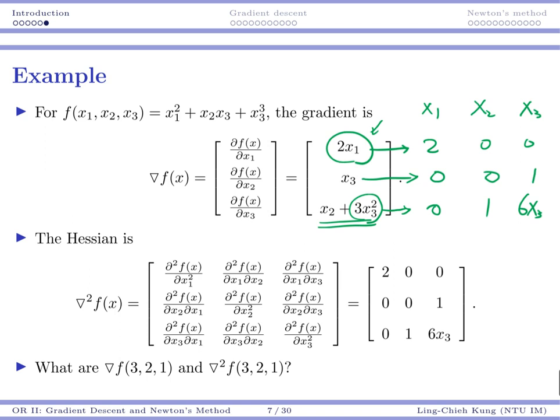That's how you get your Hessian matrix. Pretty much, you take the elements in the gradient, and then differentiate each of them with respect to x1, x2, and x3 again. That's how you get the Hessian matrix.